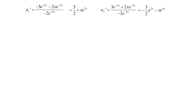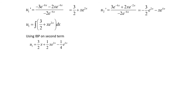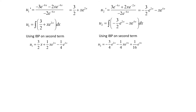Integrating to find u1 and u2: u1 = integral of (3/2 + x·e^(2x)). Using integration by parts on the second term, we get u1 = (3/2)x + (1/2)x·e^(2x) - (1/4)e^(2x). For u2 = integral of (-3/2·e^(2x) - x·e^(4x)), using integration by parts on the second term, we get u2 = -(3/4)e^(2x) - (1/4)x·e^(4x) + (1/16)e^(4x).